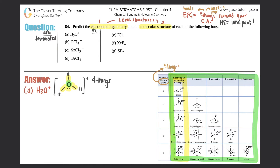For molecular structure, we focus on just the lone pairs on the central atom. H3O+ has one lone pair, so with four total things and one lone pair, the molecular structure is trigonal pyramidal.